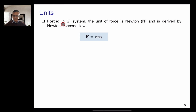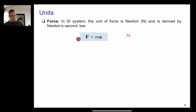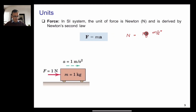In the SI system, the unit of force is the Newton, derived from Newton's second law. One Newton equals one kilogram times one meter per second squared (kg·m/s²). If you consider a body of mass one kilogram and apply one Newton of force, it will produce an acceleration of one meter per second squared.